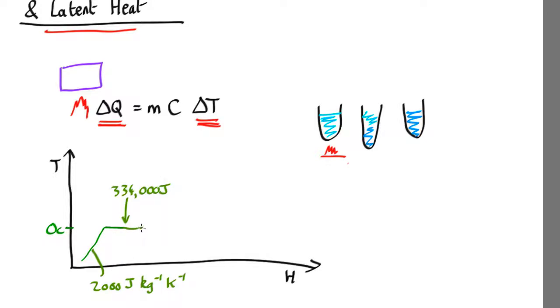But eventually you've put enough heat in and it's all melted, then the temperature starts rising again. But now it rises slower because the liquid water has a very high specific heat capacity. It's about the highest specific capacity of anything—it's 4,200 joules per Kelvin per kilogram.